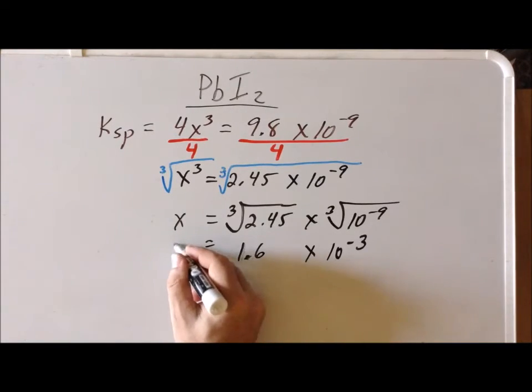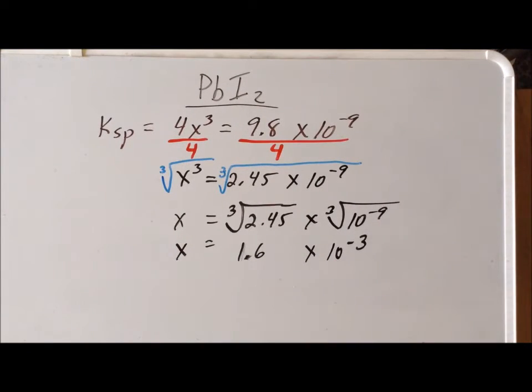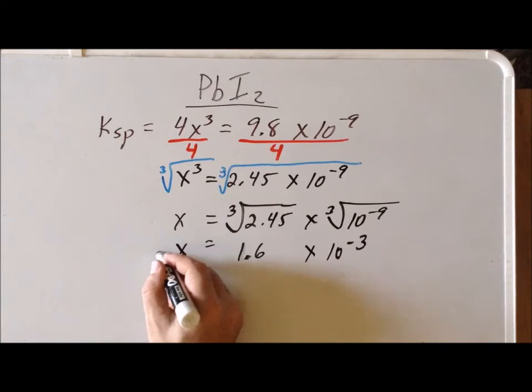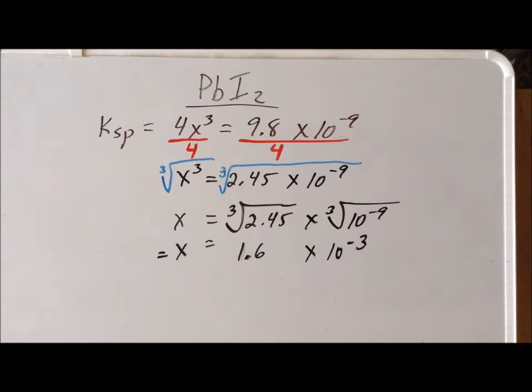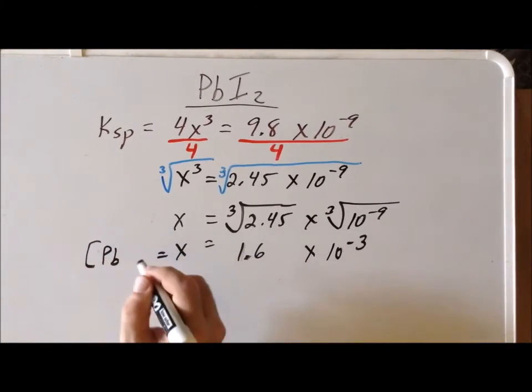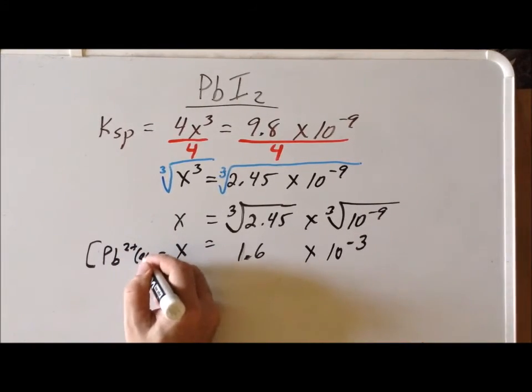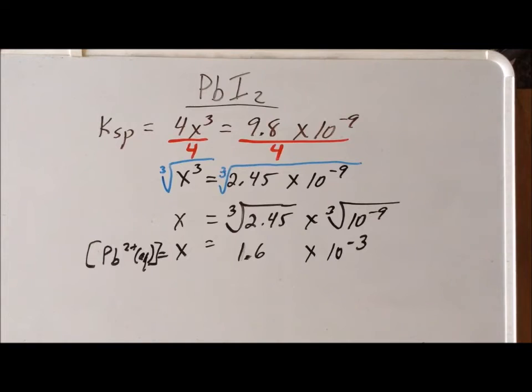So this tells us that the value x is equal to 1.6 times 10 to the minus 3. Now we recall what x is equal to. It's always important to write down and recall exactly what the variable that you're solving for represents. As I write in the shorthand here, it's the concentration of the lead 2+ ion. We also notice, if you back up in the video, that we got one lead 2+ ion for every one molecule of lead iodide that actually dissolved.